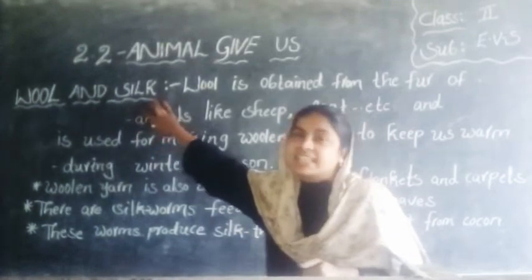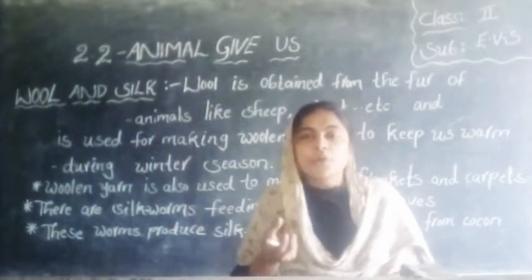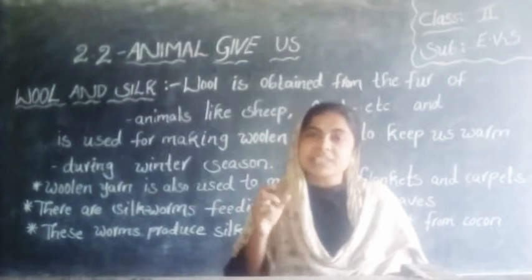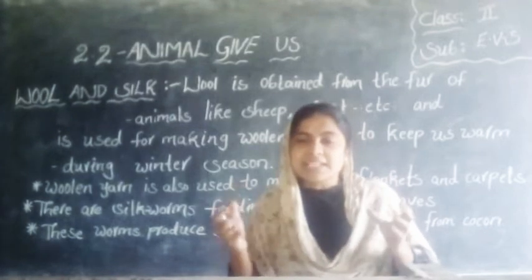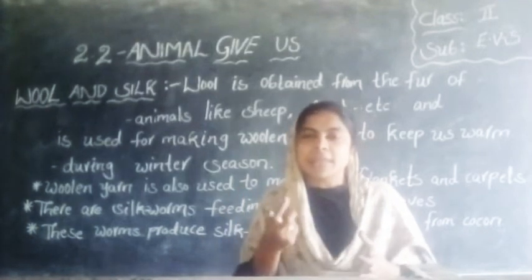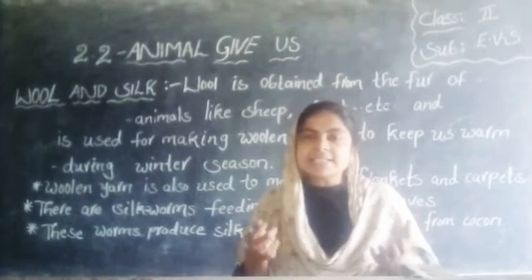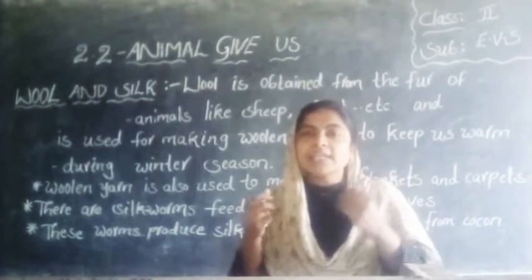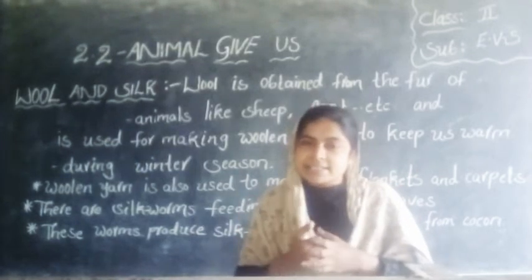Wool, like silk — for example, goat and sheep — is used to make woolen carpets and woolen clothes during winter season.